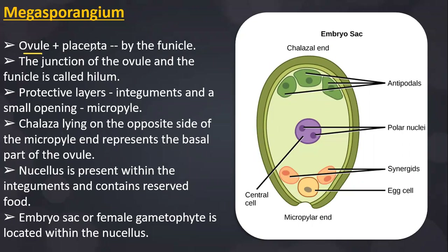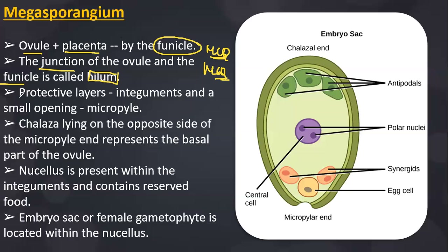The ovule is the female gamete attached to the placenta inside the ovary through a structure called the funicle. The junction of the ovule and the funicle is called the hilum. The protective layers are known as integuments. The area not covered by integument is called the micropylar region. The region opposite to the micropyle is called the chalaza, which represents the basal part of the ovule.